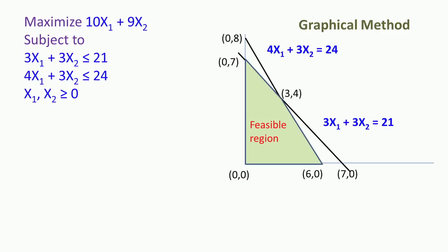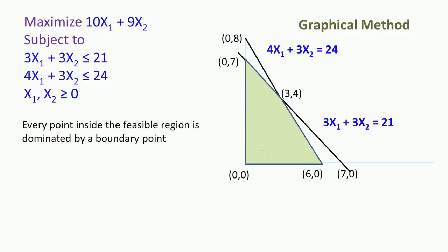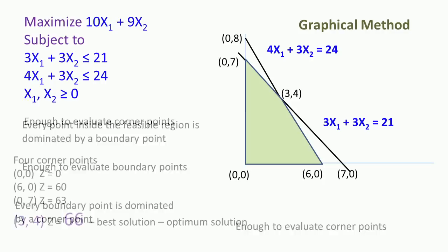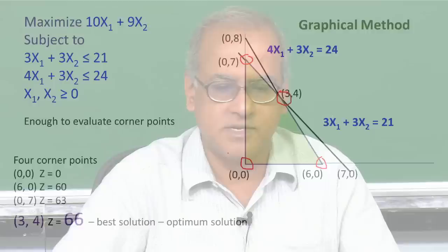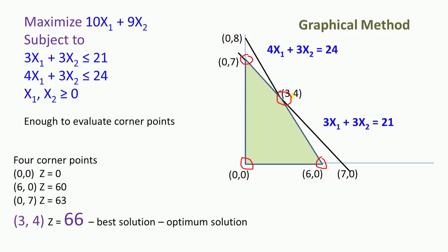We restricted ourselves to evaluating only the corner point solutions and found the optimum solution from the best corner point. In this example we had four corner points: (0,0), (6,0), (0,7), and (3,4). The optimum solution was the corner point (3,4) which gave us a value of 66.